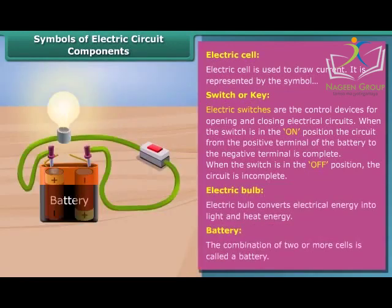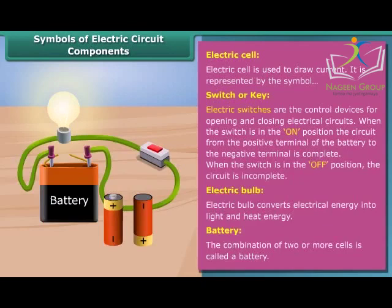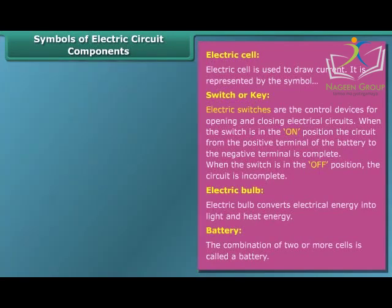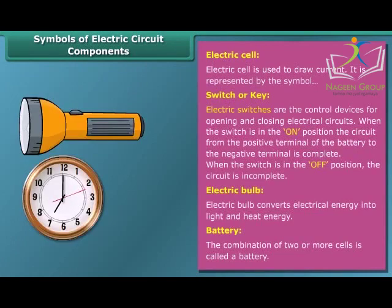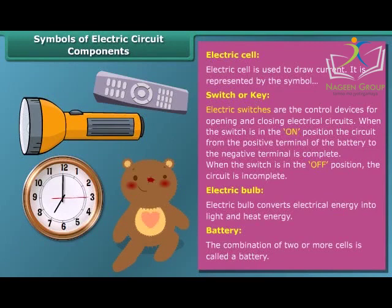The combination of two or more cells is called a battery. In a battery, the positive terminal of one cell is connected to the negative terminal of the next cell. Many devices such as torches, wall clocks and watches, toys, and TV remote controls are battery-operated devices.